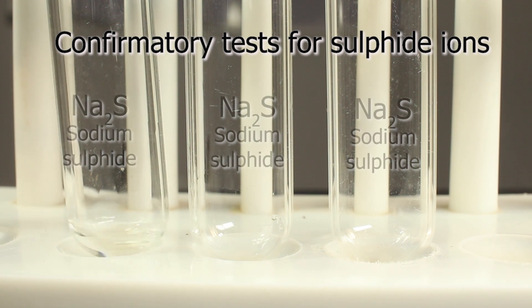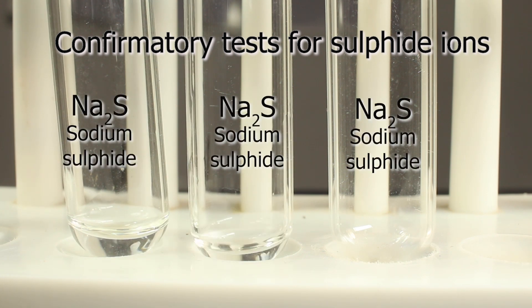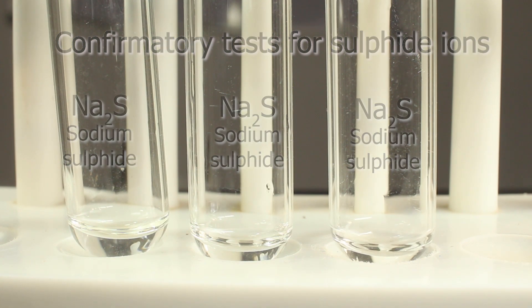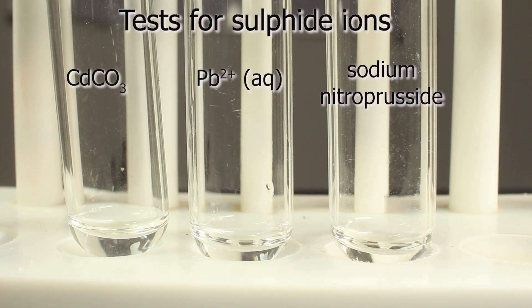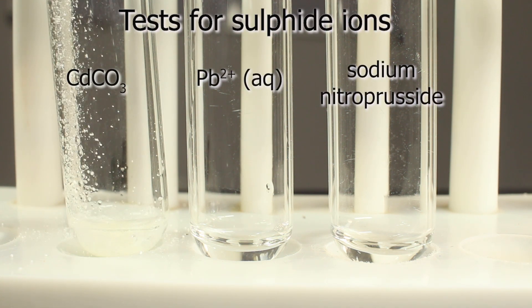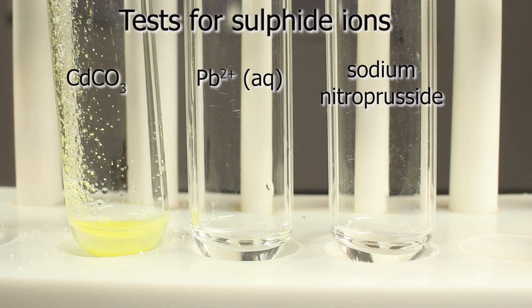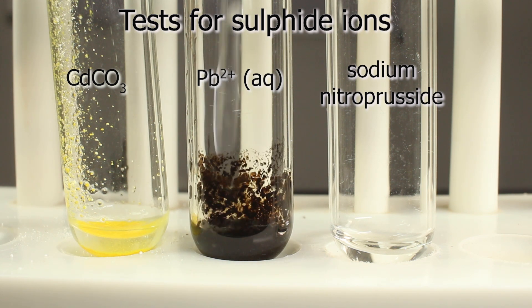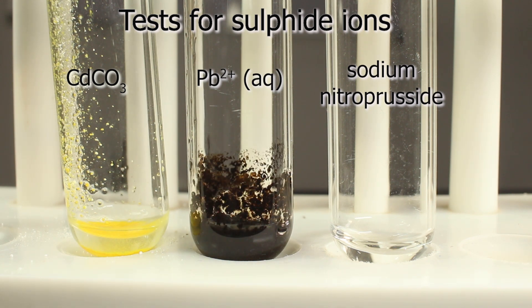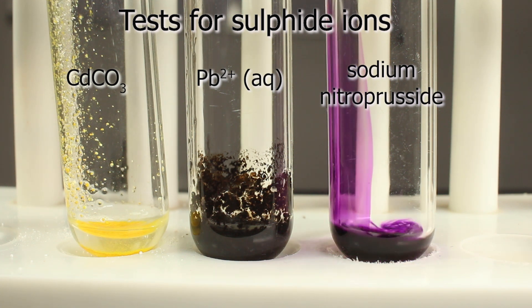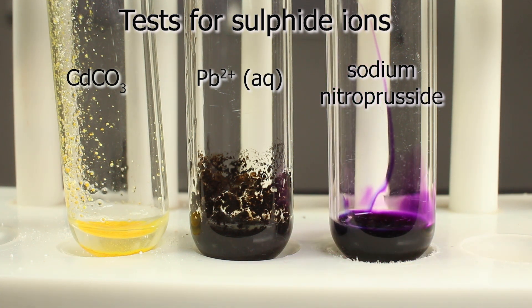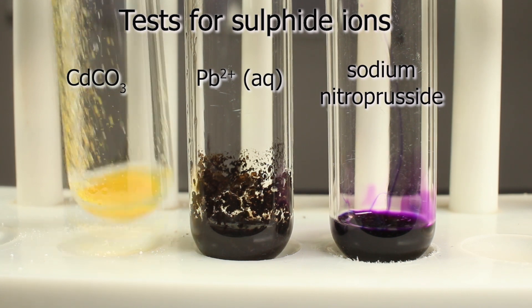Let's run three tests at once, without bothering with controls. White powder of cadmium carbonate changing into yellow. Lead acetate forms black precipitate. And sodium nitroprusside forms violet-purple complex.